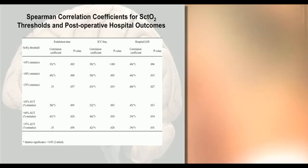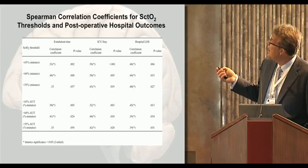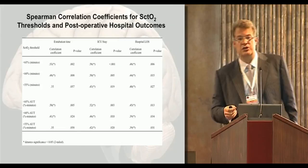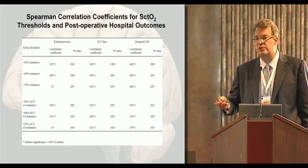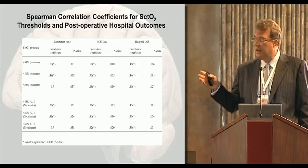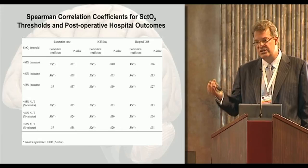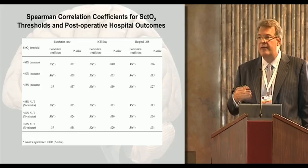We also used Spearman's correlations to look at thresholds against extubation time, ICU length of stay, and hospital length of stay, and found significant correlations. The longer patients were underneath these thresholds, the longer they would be intubated, the longer they would stay in the ICU, and the longer they would be in hospital. Patients who were more than 30 minutes under the threshold of 60% stayed in hospital on average four days longer than patients who were not, corresponding to an increased cost of about $8,500.